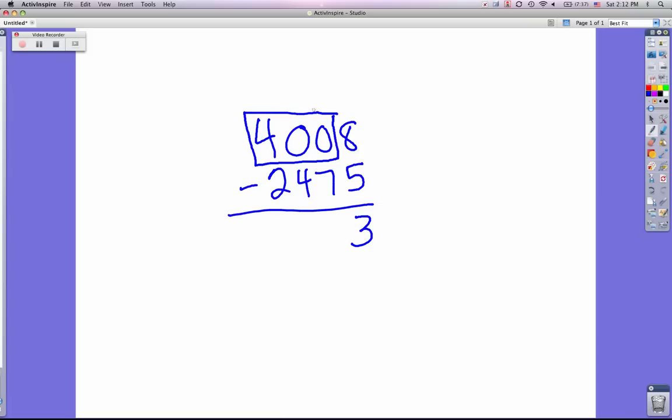0 take away 7. Now we can't do that, so I'm going to only box this number 40 and regroup from that, make that 39. The 0 becomes 10. 10 minus 7 is 3, 9 minus 4 is 5, and 3 take away 2 is 1.